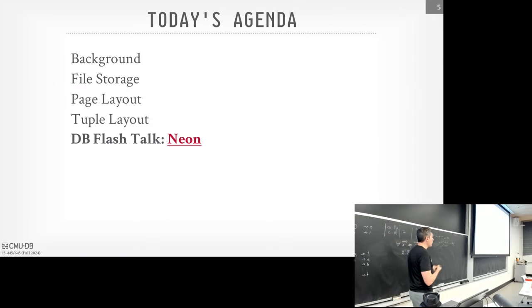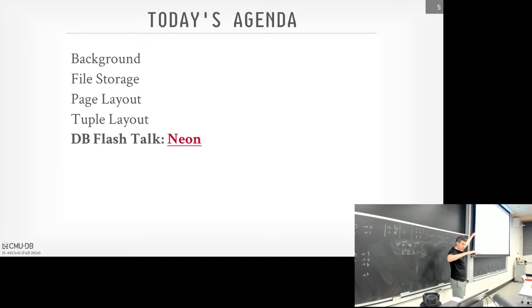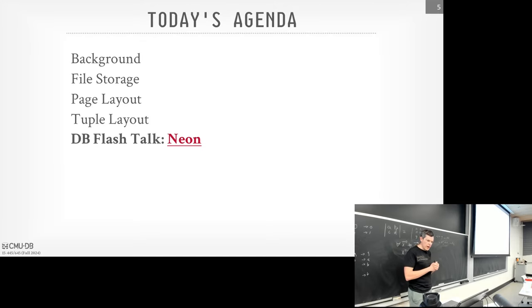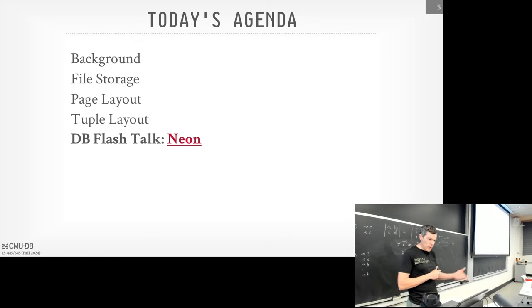We'll first provide background about what it means to have a disk-based database system, then talk about what the files look like, what the pages look like — the file is made of pages, pages have tuples inside — and then we'll talk about what the tuples look like. Next class we'll talk about the layout of the bytes within actual attributes in the tuple. Also, every Wednesday we'll have a flash talk. Today's flash talk is from Neon — the co-founder, a former Postgres developer, will give a 10-minute talk. You may not understand everything, but as we go through the semester more of it will start to make sense.